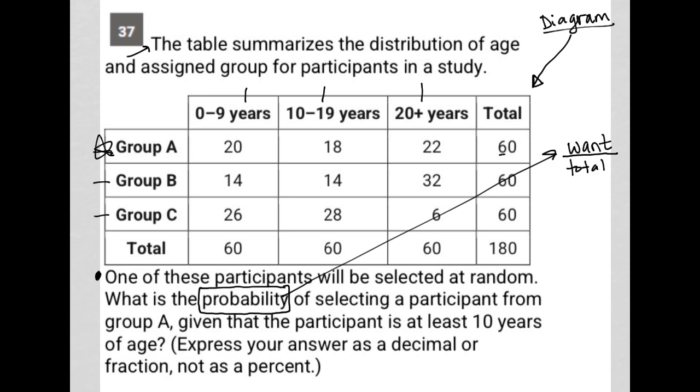So group A, there are 60 participants, but in order to be at least 10 years of age, you would only include the 18 that are 10 to 19 years old and the 22 that are 20 plus years old, which means I'd only have 40 participants in group A that actually count.